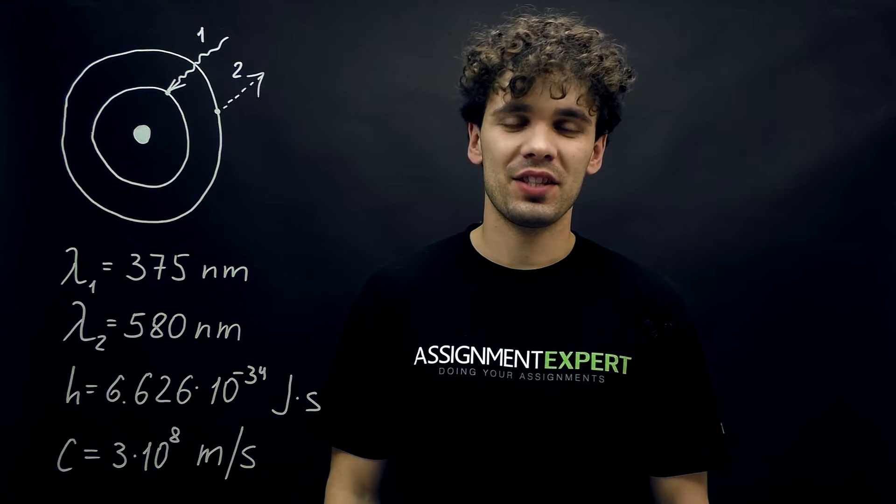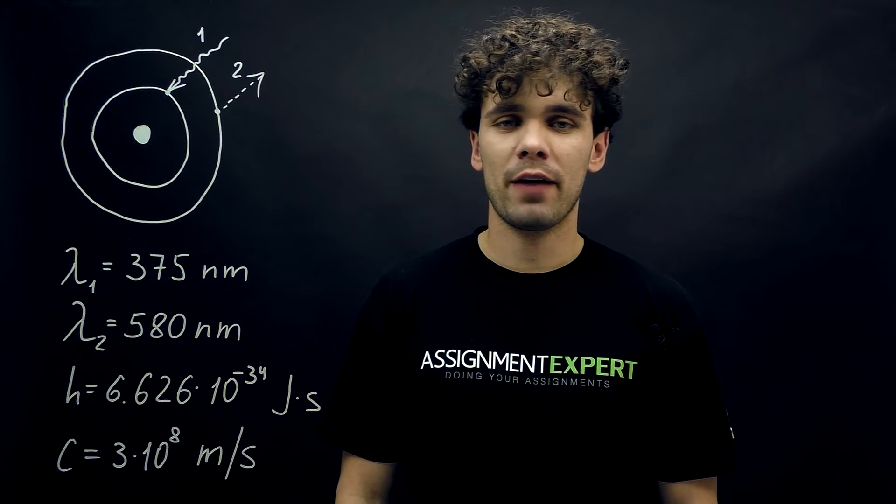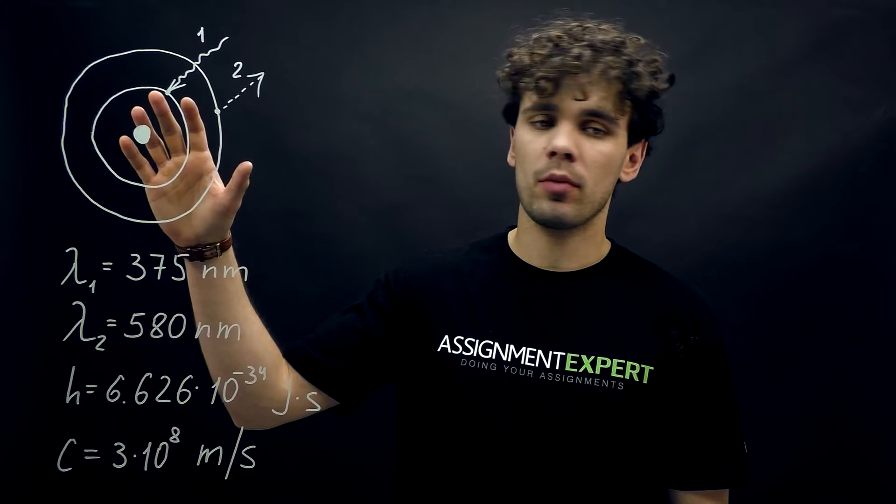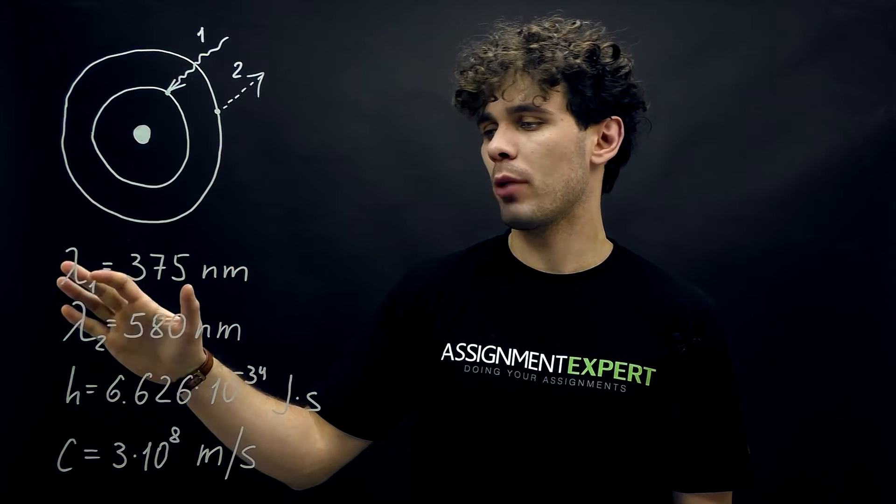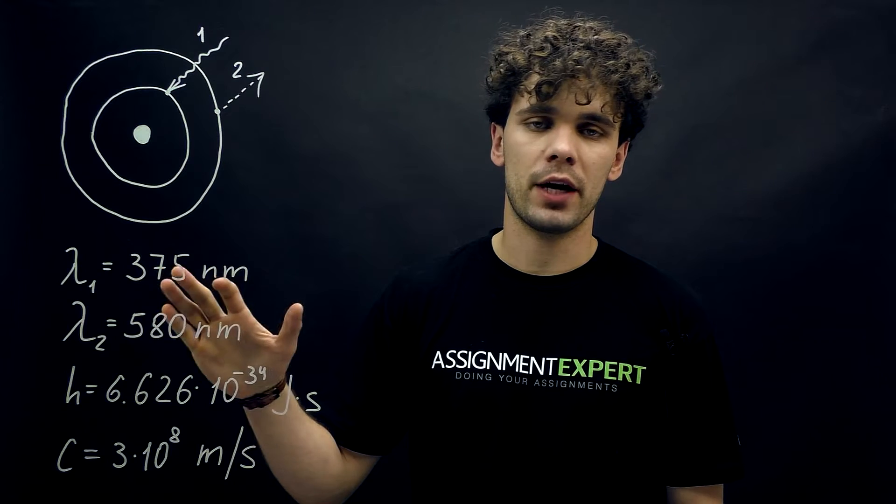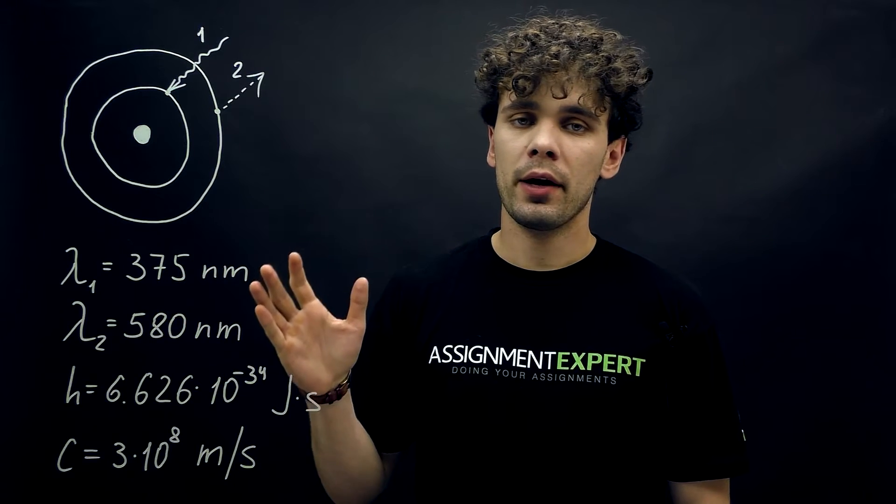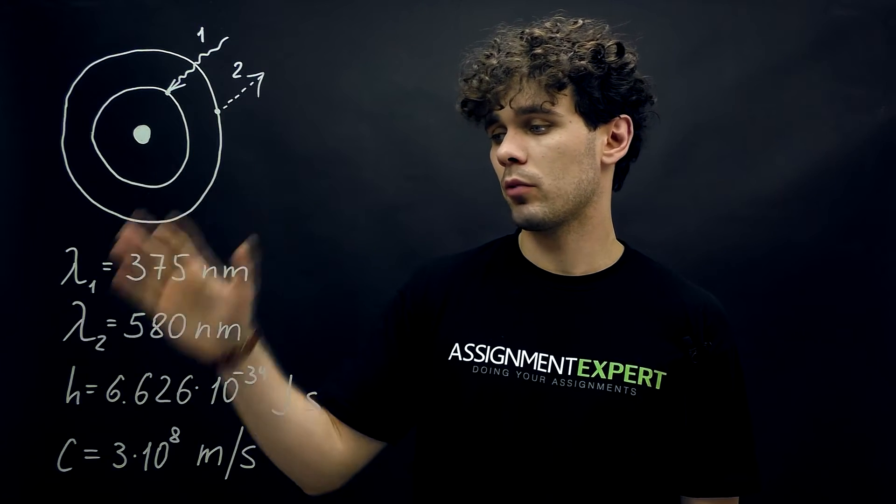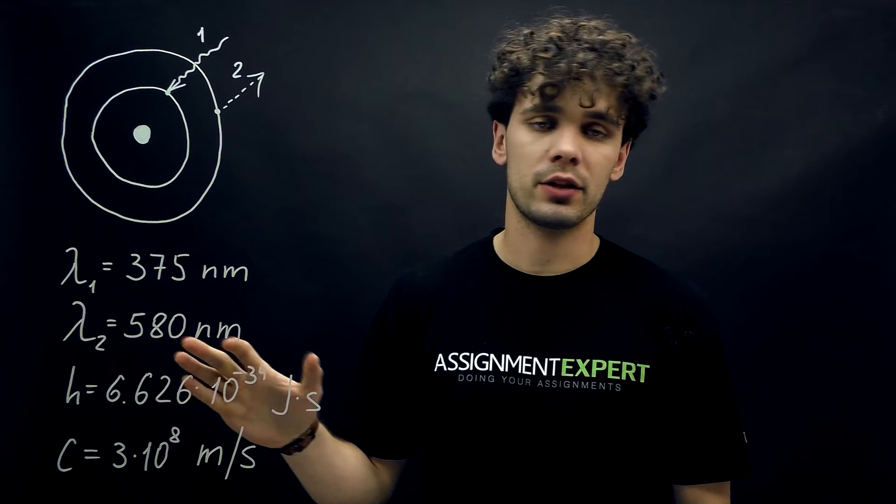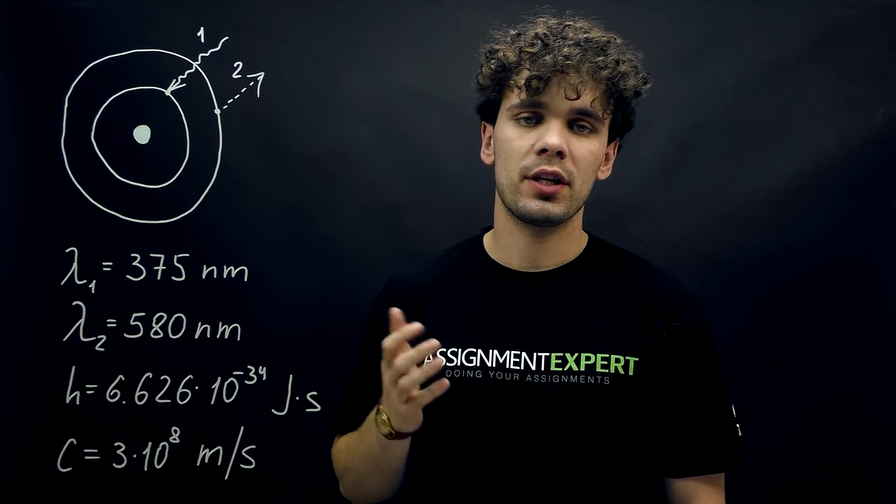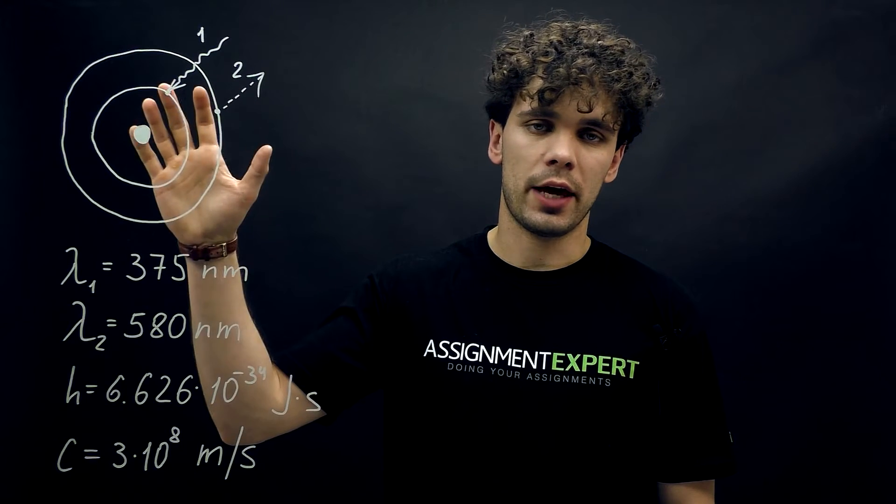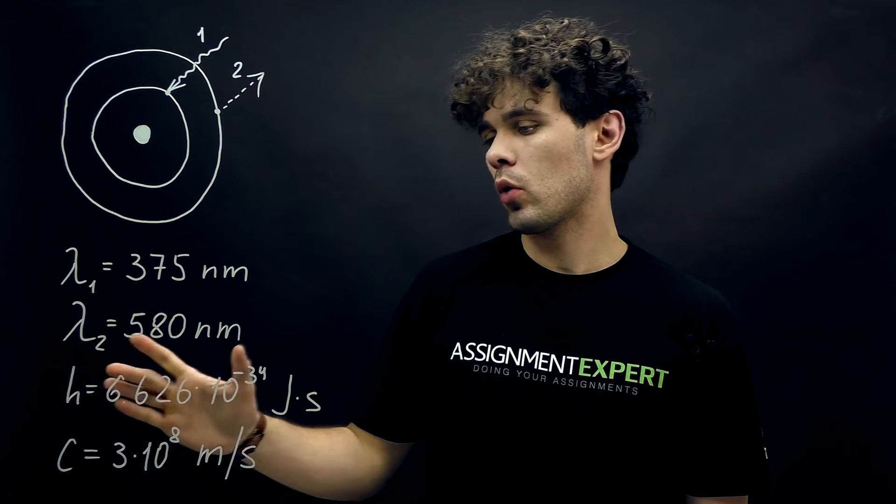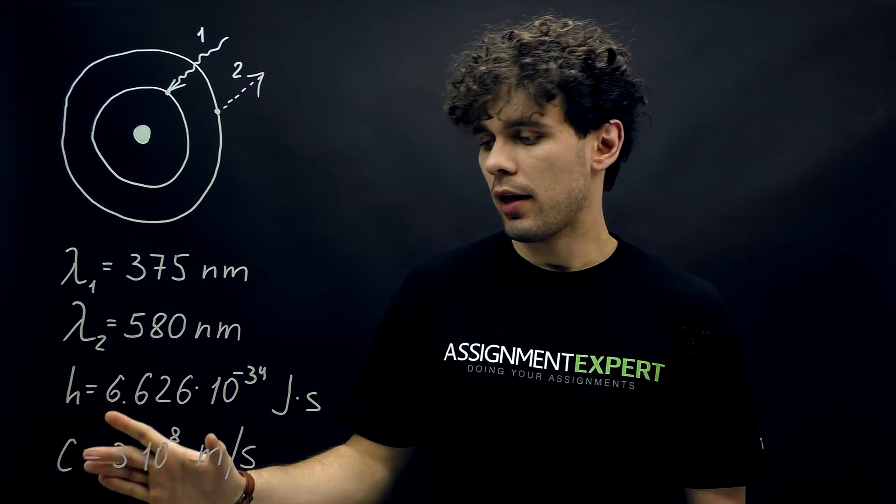Hi guys, this is Assignment Expert. Today we have a question from Sajid from Pakistan. An atom absorbs a photon with the wavelength 375 nanometers and then immediately the same atom emits a photon with the wavelength 580 nanometers. What is the net energy absorbed by this atom? To answer this question we also need to know the Planck's constant and the speed of light.